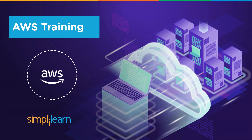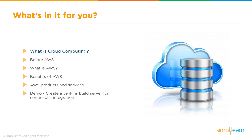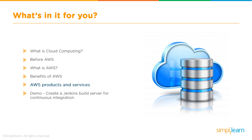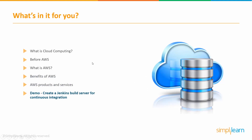In this section, we're going to talk about what is cloud computing and how things were before AWS. And we're going to talk about what is AWS and the benefits of AWS and the products and services that Amazon offers. And then finally, we're going to end the session with a project that will help us understand how to create a Jenkins build server for continuous integration. In this project, we will learn how to deploy and host Jenkins, an open source automation software predominantly used for CI/CD — continuous integration and continuous development.